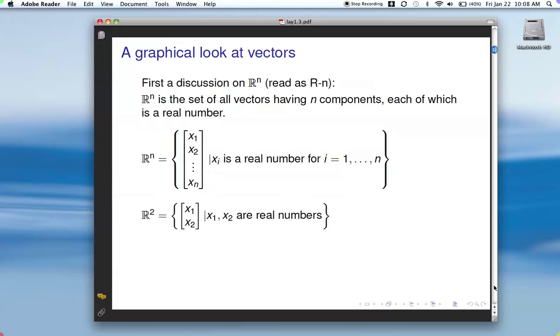A lot of times we'll just talk about R^2. In R^2, the 2 indicates vectors with 2 components. And there's R^3, similar sort of thing. We've got 3 components where each one is a real number.